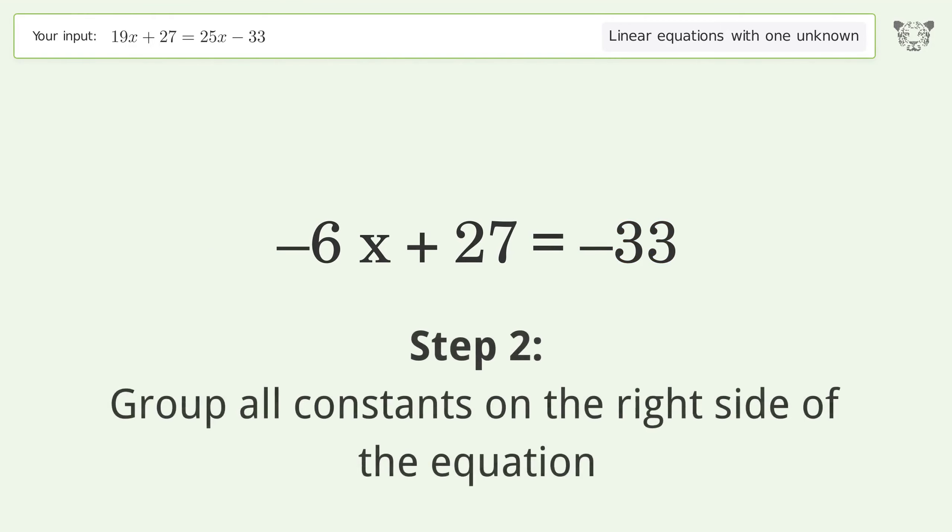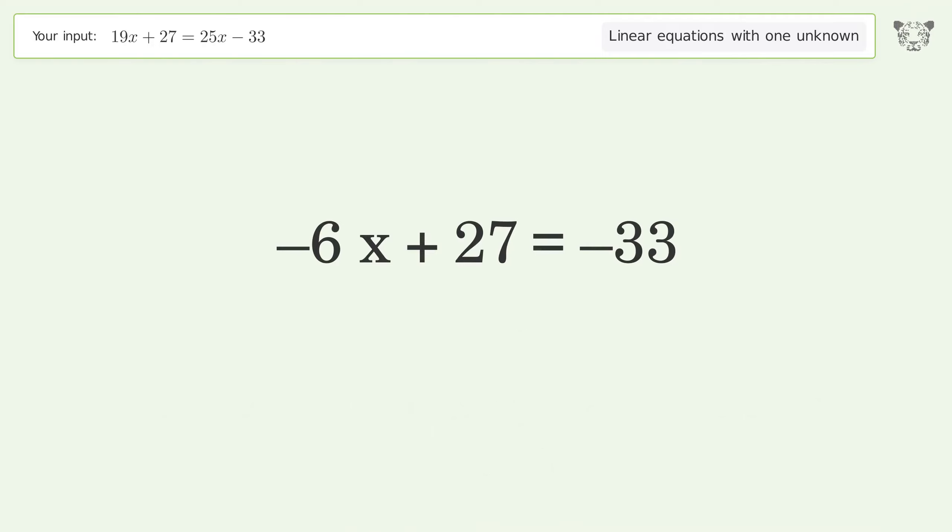Group all constants on the right side of the equation. Subtract 27 from both sides. Simplify the arithmetic.